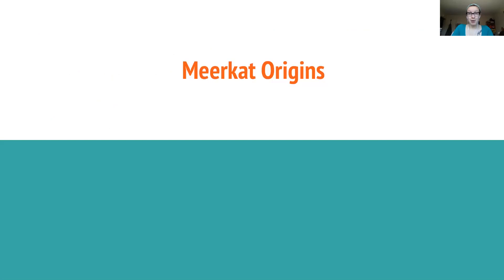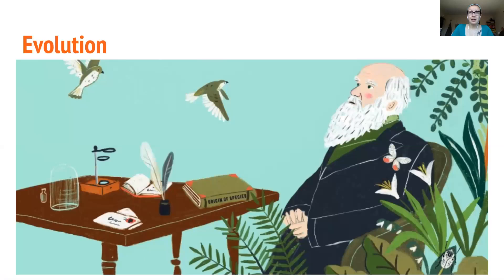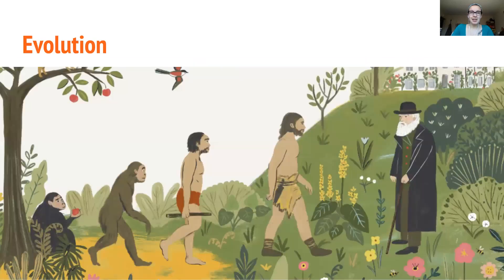Today we're going to talk about meerkats and their origins first. This guy in the picture is Charles Darwin. He is a famous naturalist from England and it took him about 20 years to write a really cool book called The Origin of Species, which explained the process of evolution. The basics are that no two animals are the same, even if they belong to the same species. Animals and plants compete to survive, and because of this competition, little changes happen within the species and those add up over thousands or millions of years to create a whole new species.